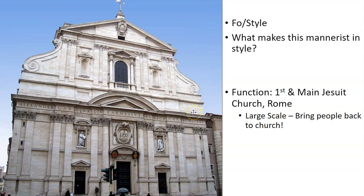A lot of church facades in Italy are made to look more grand than the actual building. A lot of times the top area isn't an actual part of the church — if you walk around from the side or back, you just see this extra piece standing up. It's almost like a fake set to make it look bigger and more grand. As for function, this is the first and main Jesuit church in Rome. It is huge, and the whole point is to try to bring people back to the Catholic Church.